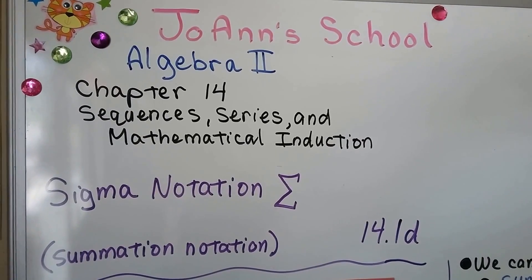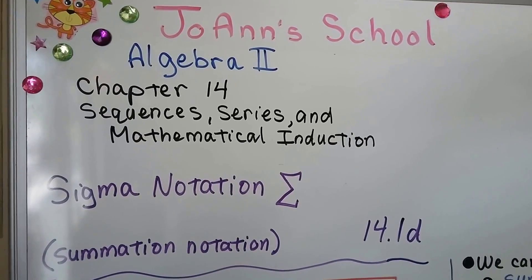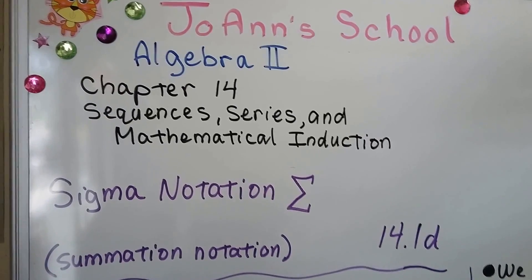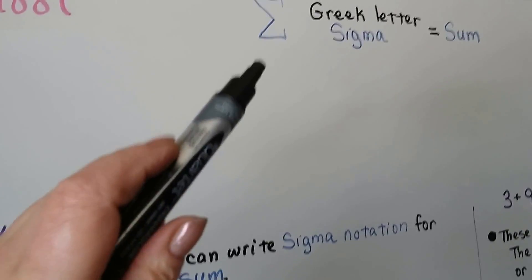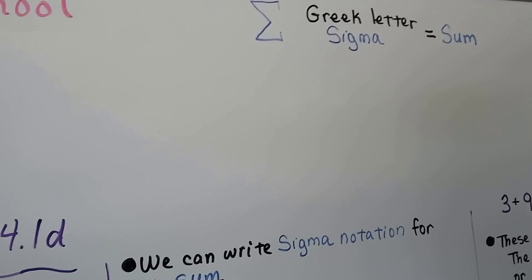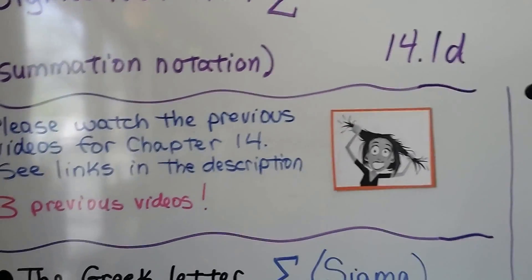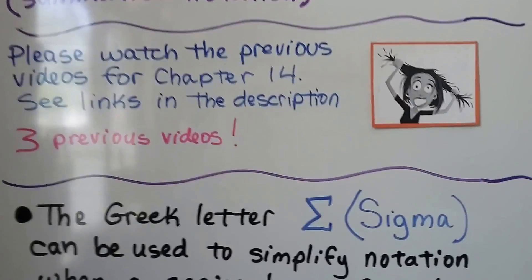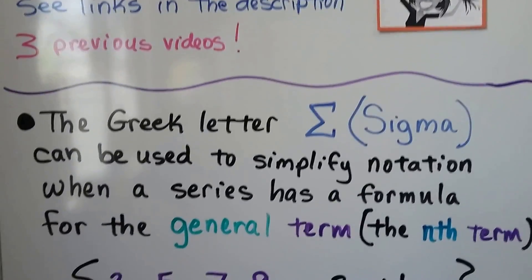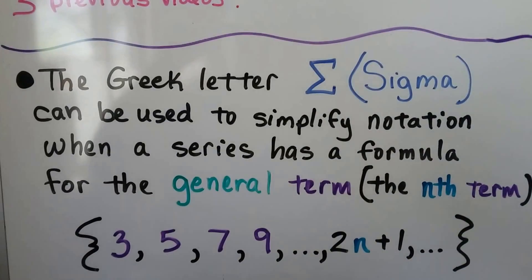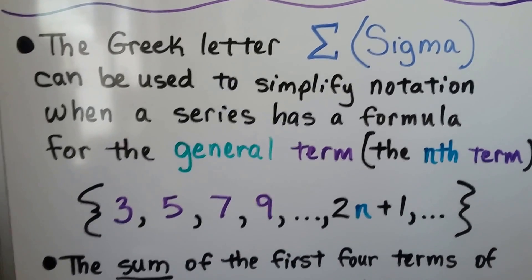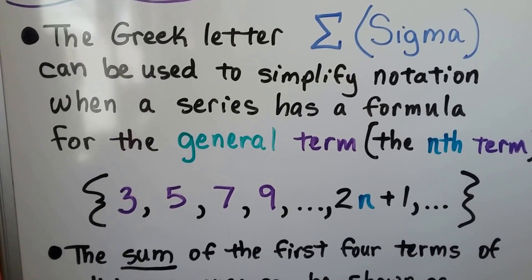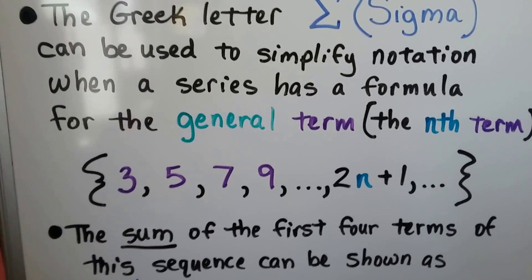We're going to be talking about sigma notation — that's summation notation. This is lesson 14.1d, and that symbol is the Greek letter sigma. We're going to use it for sum. This Greek letter is a sigma, and it can be used to simplify notation when a series has a formula for the general term — that nth term.